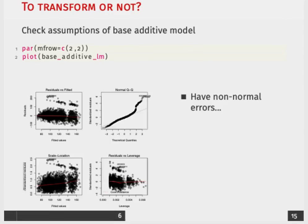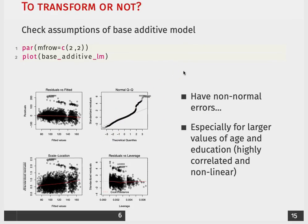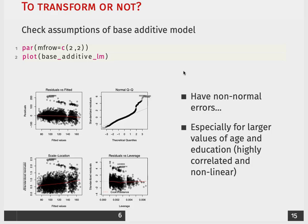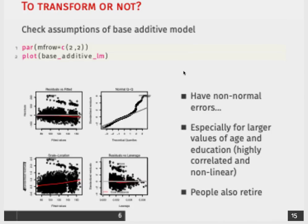What we can see here is we definitely have non-normal errors. If you look at the top right corner, the normality assumption is quite broken. There is an obvious deviation from the assumption that it should be linear here. And this is especially true for larger values of age and education, and that may be because they are highly correlated and non-linear.